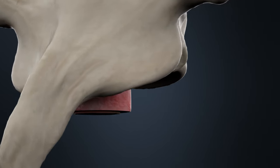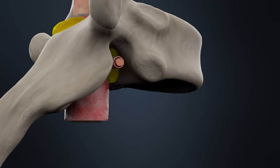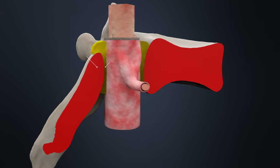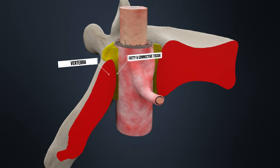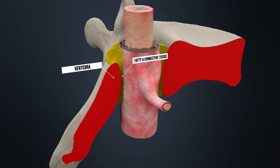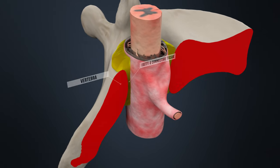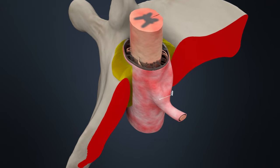Our spinal column consists of individual vertebrae that have a spinal canal, containing fatty and connective tissue, and the spinal cord. Like the brain, the spinal cord is enclosed in three membranes.